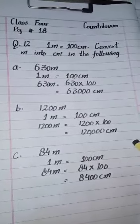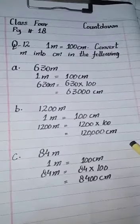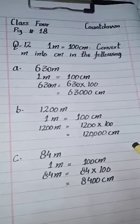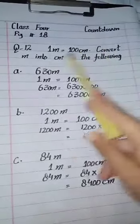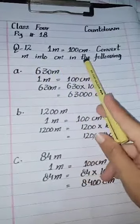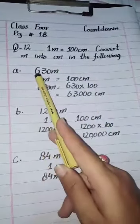Students, this video lecture is for Class 4, subject is Countdown, page number 18. Today we will start question number 12: 1 meter equals 100 centimeters. Convert meters into centimeters in the following.